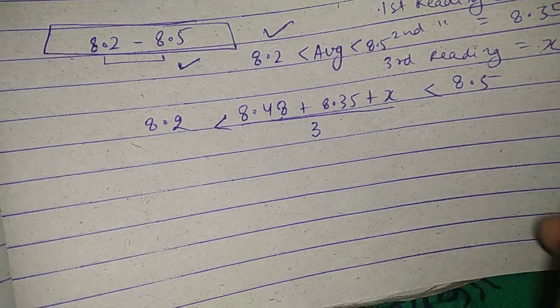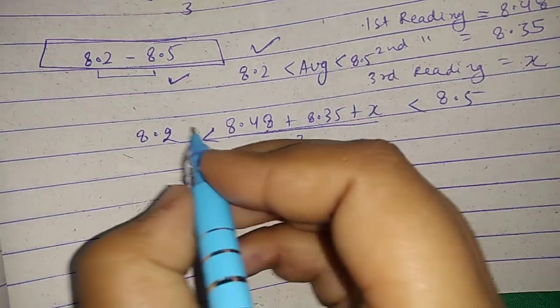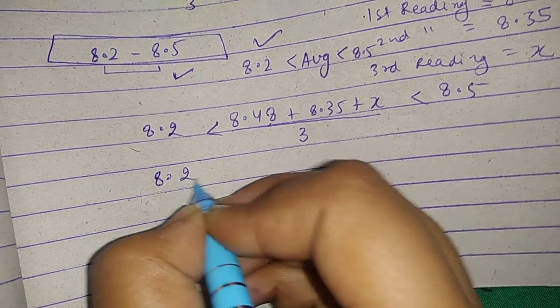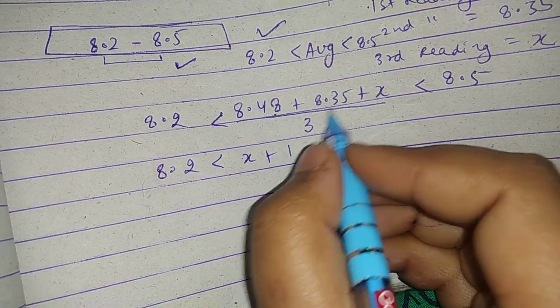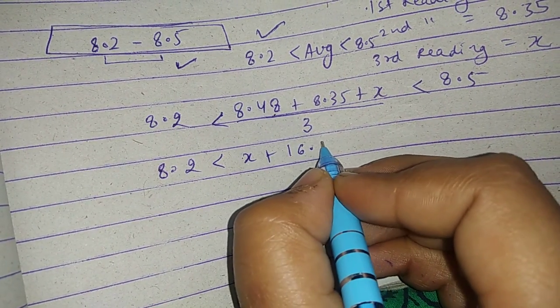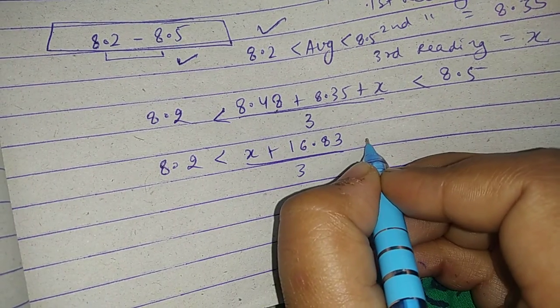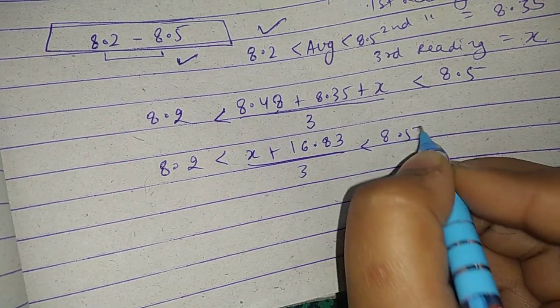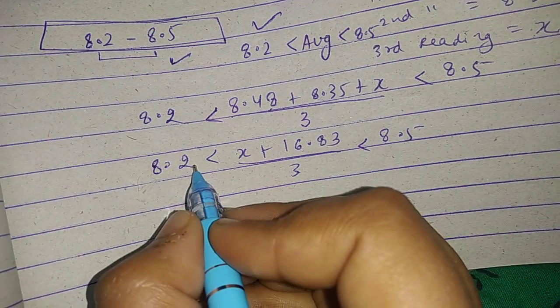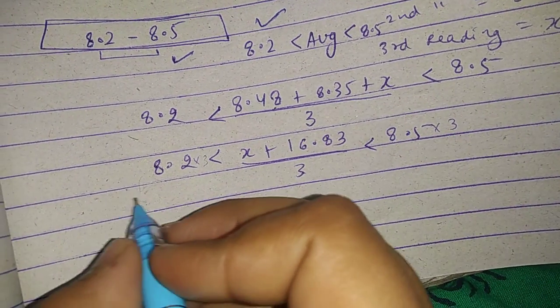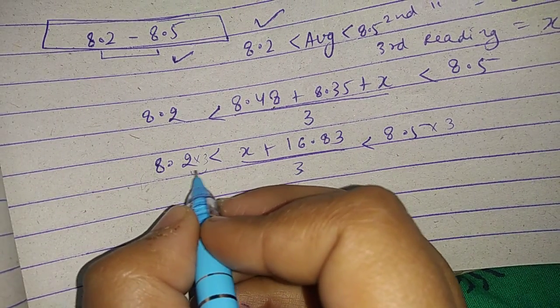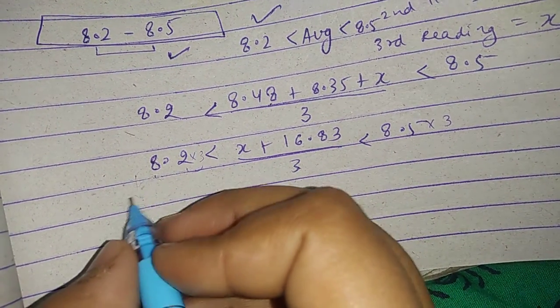We will put it in this way. We will solve this: 8.2 is less than x plus 16.83 upon 3 is less than 8.5. Denominator is less than x plus, this is how much? 3 times 8.2 is 24.6.